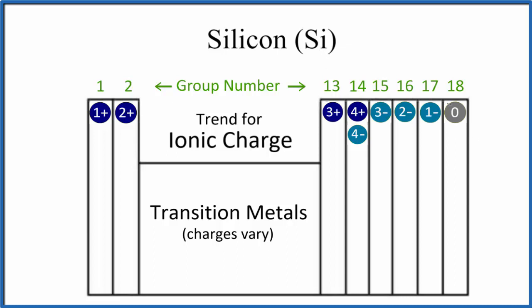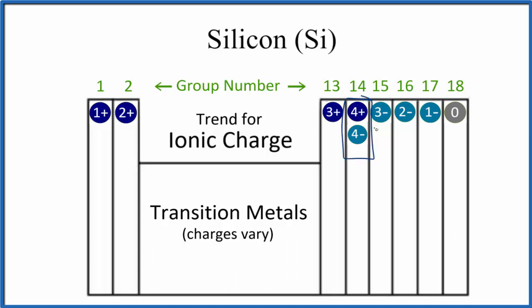If we look at the periodic table, we have this general trend for ionic charge, where Group 1 elements form ions with a 1+ ionic charge, Group 2 is 2+, Group 13 is 3+, and then Group 14 — which would be silicon — that would be either 4+ or 4−.